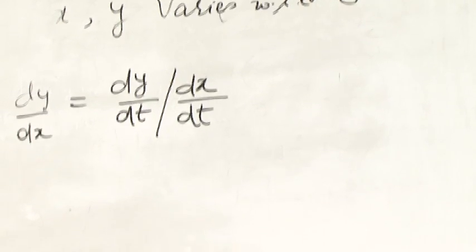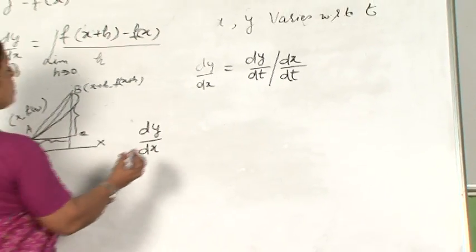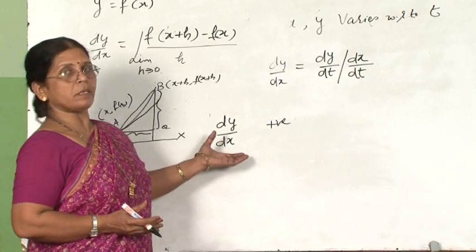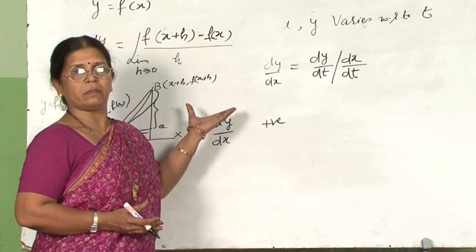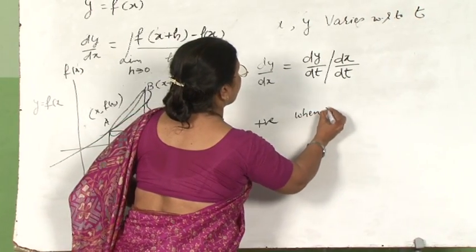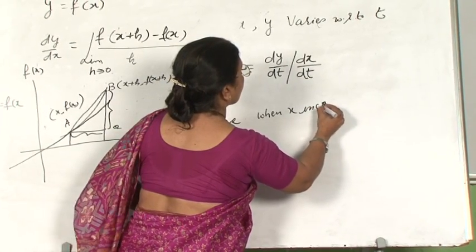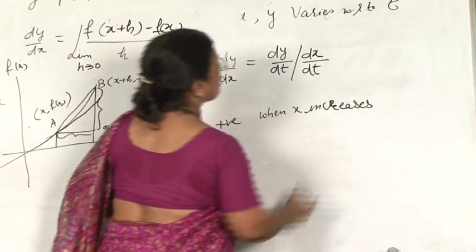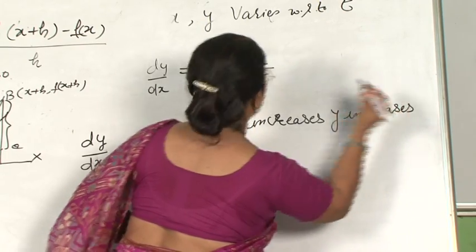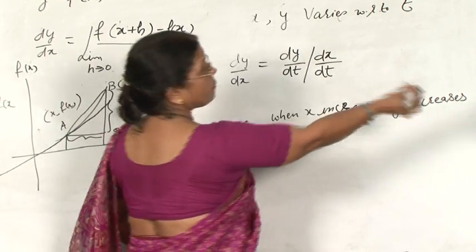If dy/dx, the rate of change of y with respect to x, is positive, it means when x increases, y increases. If it is negative, it means when x increases, y decreases.